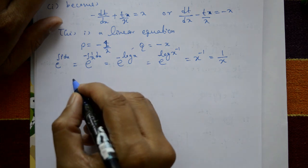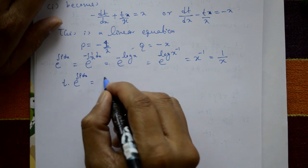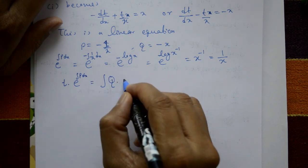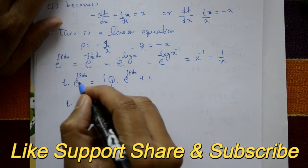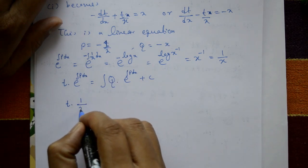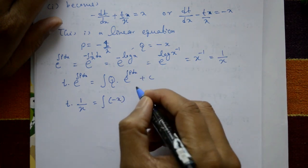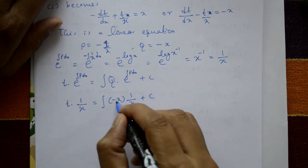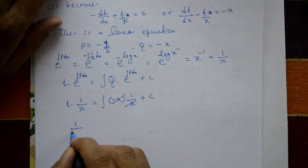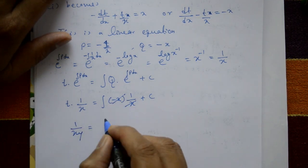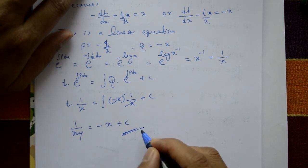The next step: t·(integrating factor) = ∫q·(integrating factor) dx + c. So t·(1/x) = ∫(-x)·(1/x) dx + c. The x cancels, giving t/x = ∫(-1) dx + c. Since t = 1/y, we get 1/(xy) = -x + c. This is the required solution.